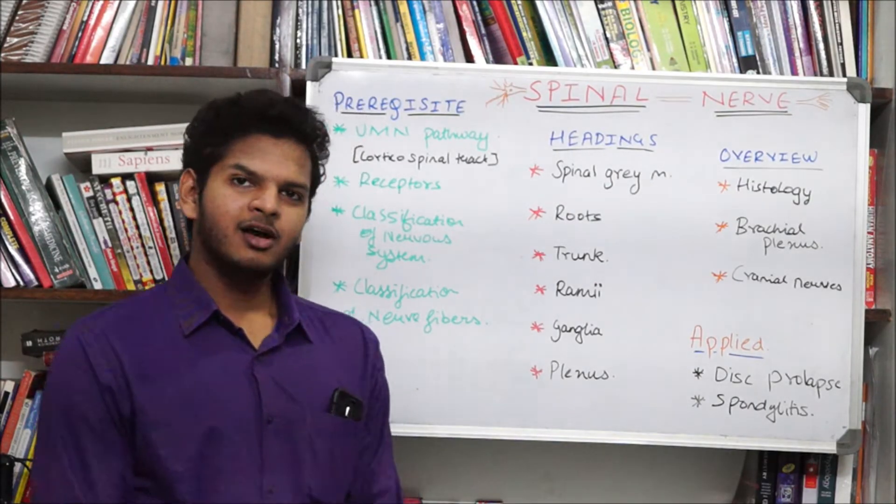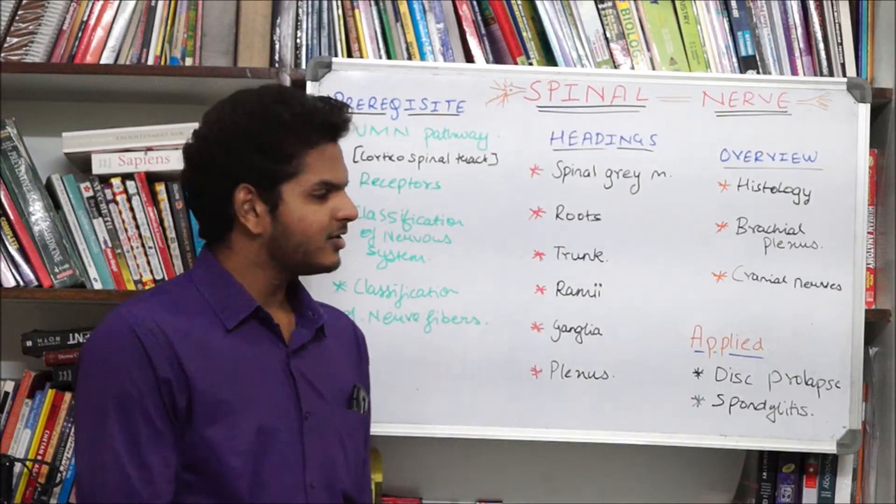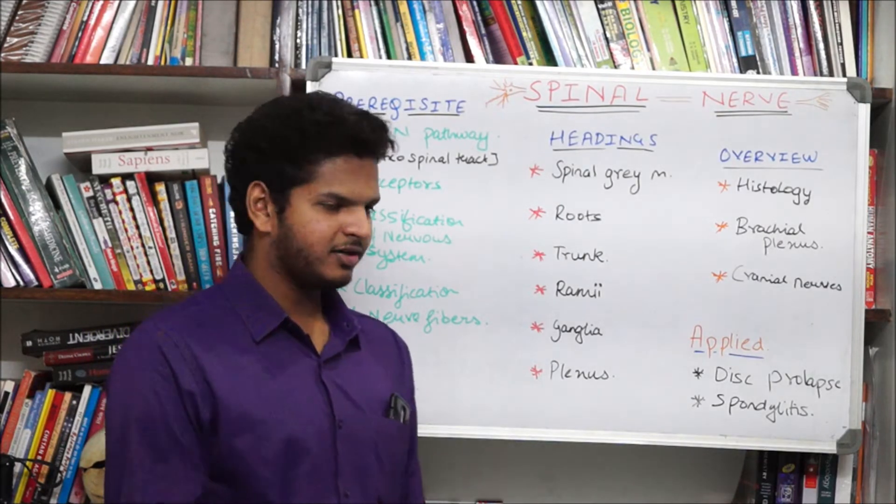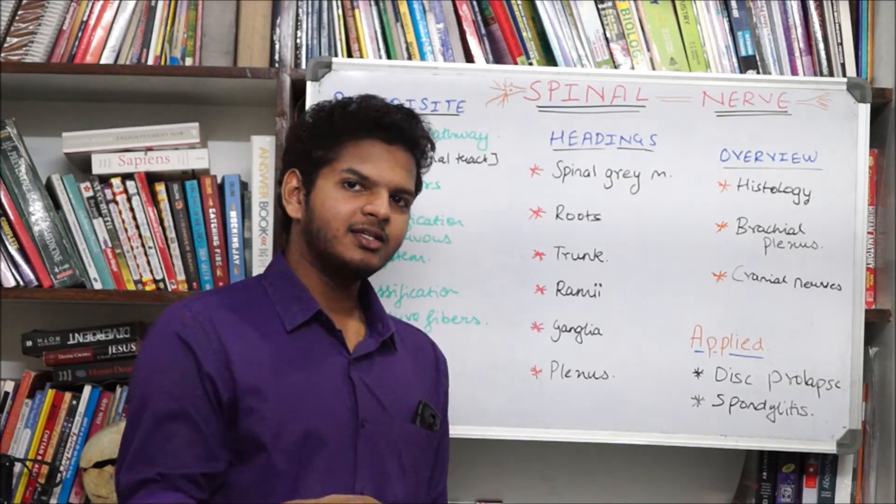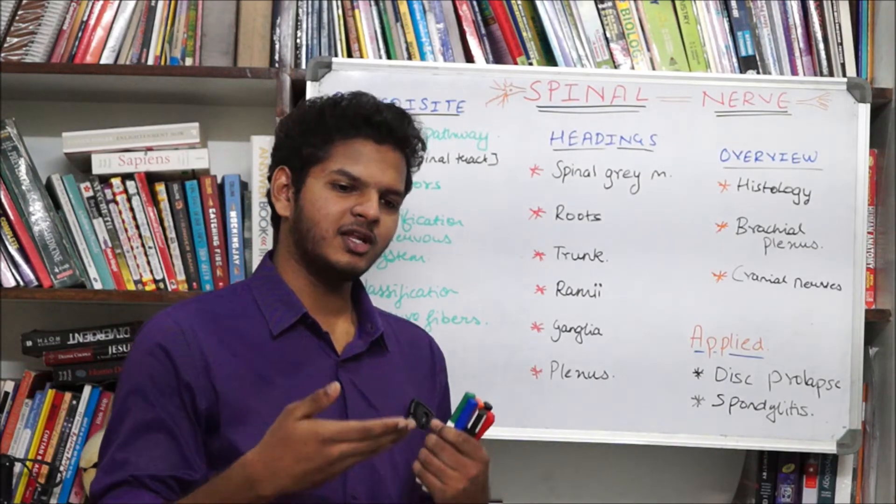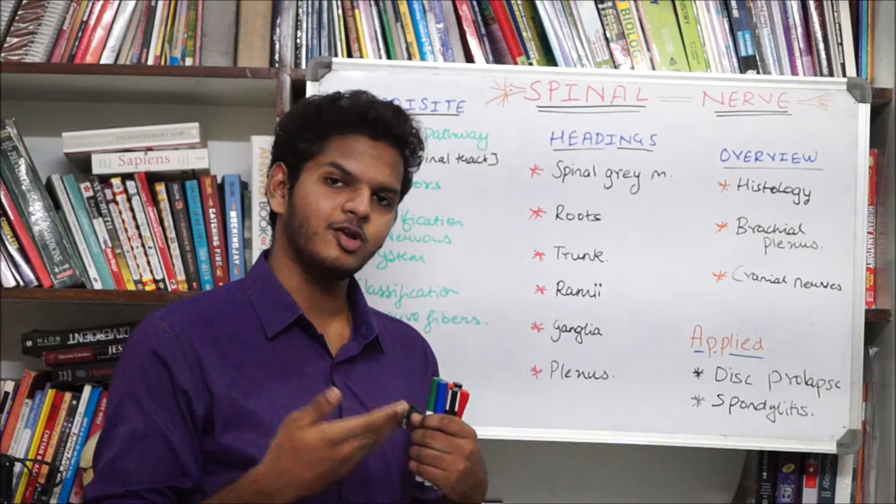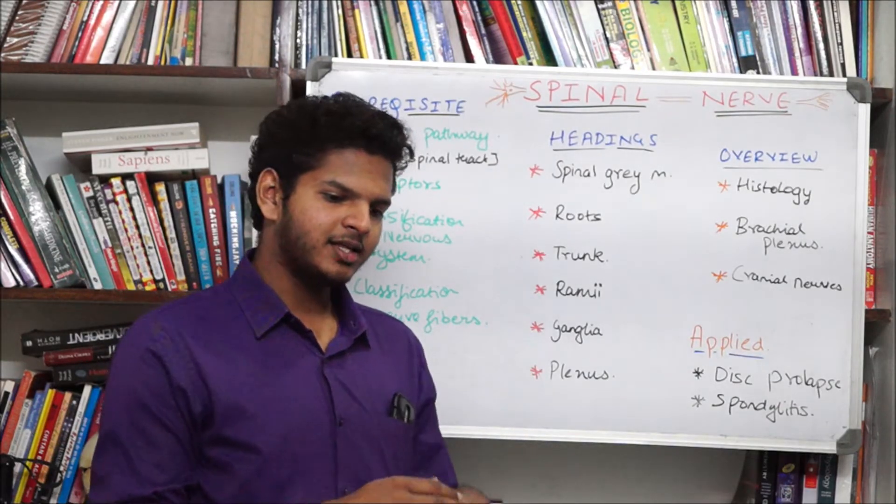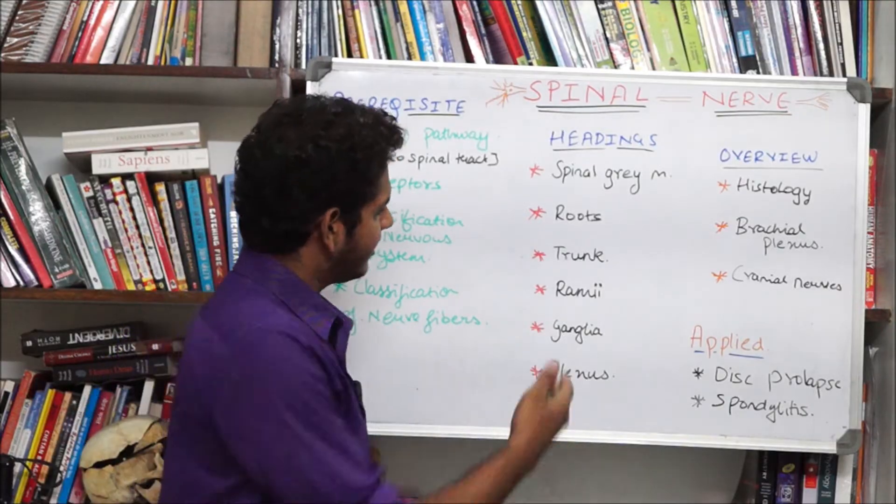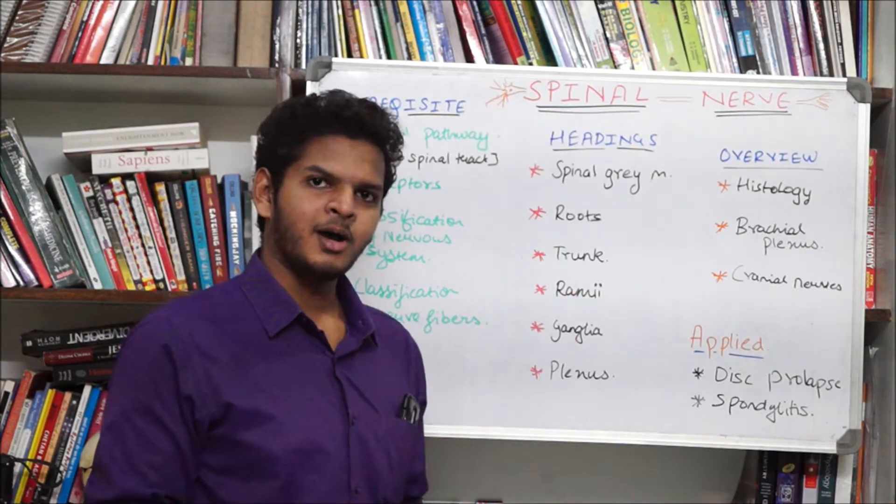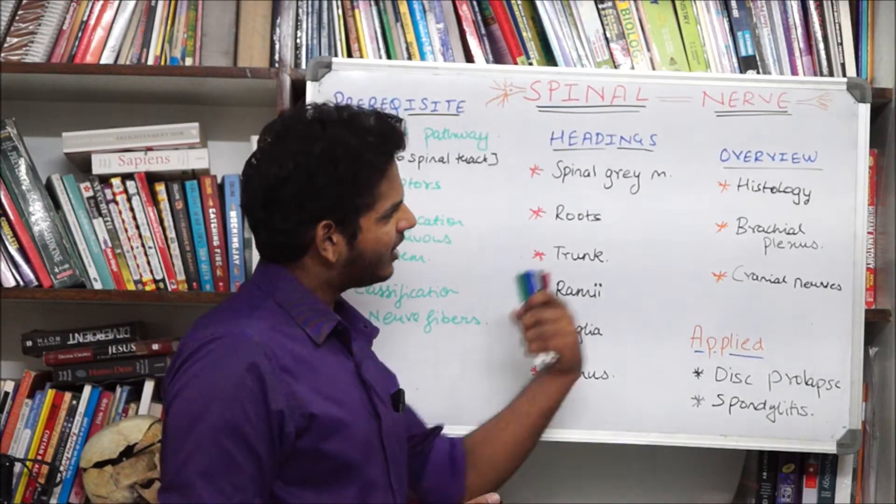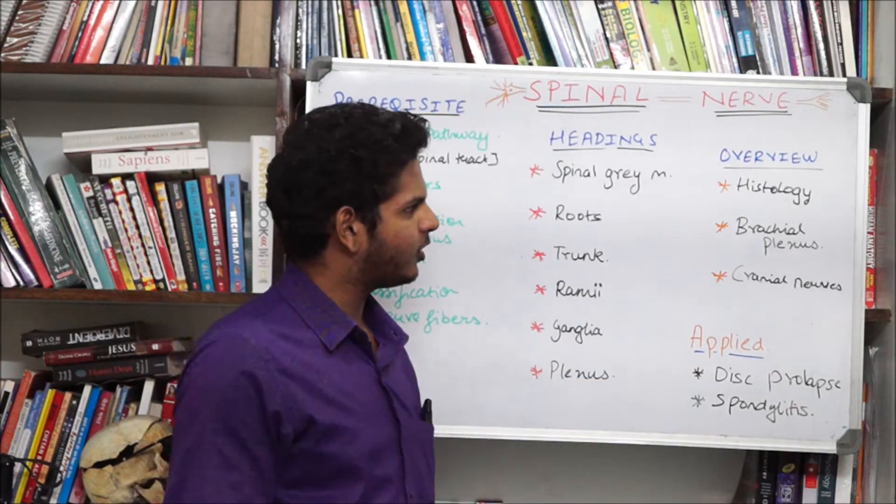The topics written in black, I will be covering in very detail. We have the headings: we have spinal gray matter which is basically the gray matter of the spinal cord where most of the interactions between interneurons happen and the upper motor neuron, lower motor neuron happen. Then we are going to go over the roots, the trunks, and then the rami.